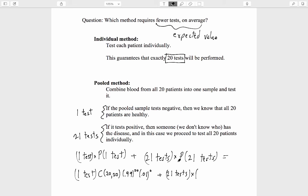So the probability that we're in this scenario of having to do 21 tests is exactly the complementary probability. One minus the probability of having to do only one test.